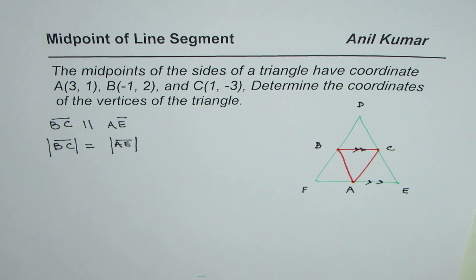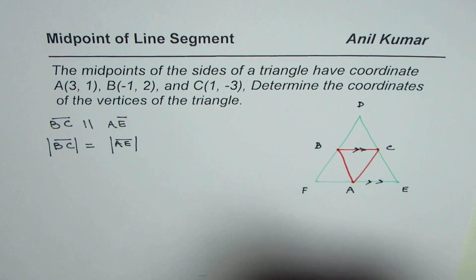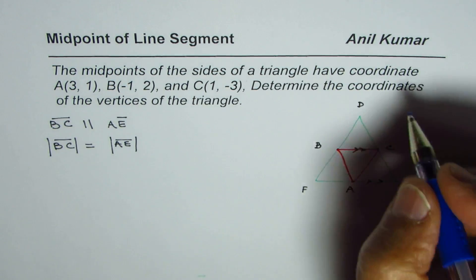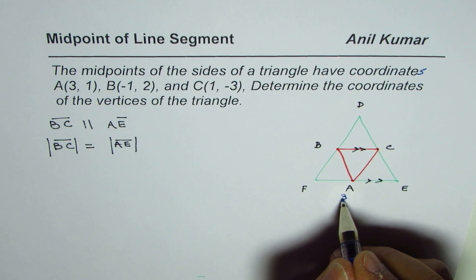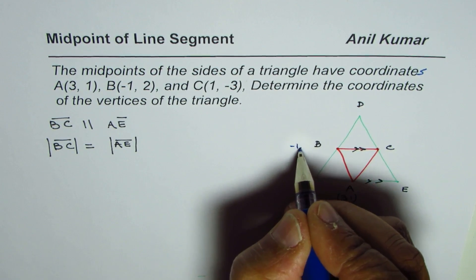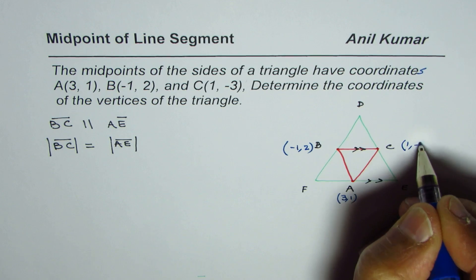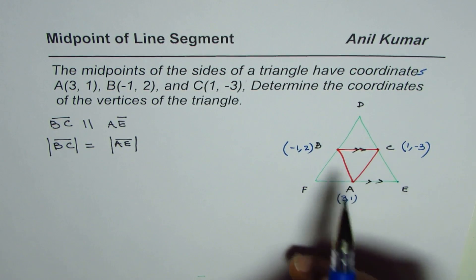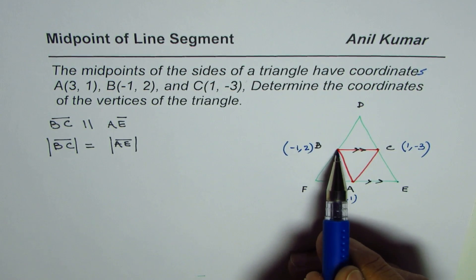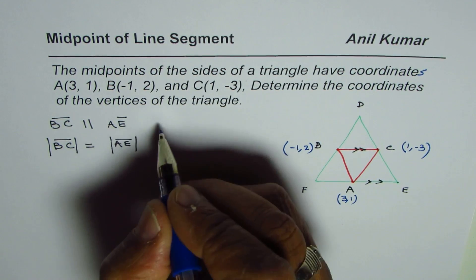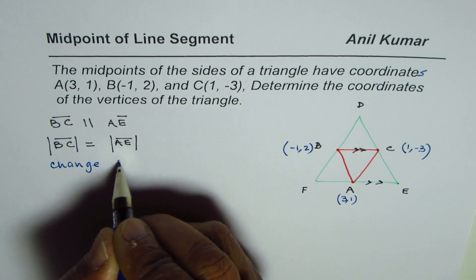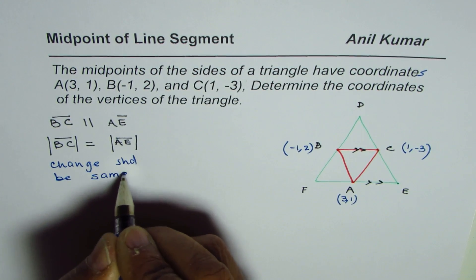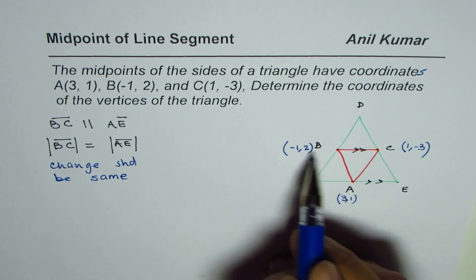That is the property we are going to use to find the coordinates of point E, one of the vertices of the triangle. Now, if you have understood the concept, you can pause the video and answer, then compare your solution. The strategy is that the change in coordinates should be the same. So let's find the change in X value and change in Y value.